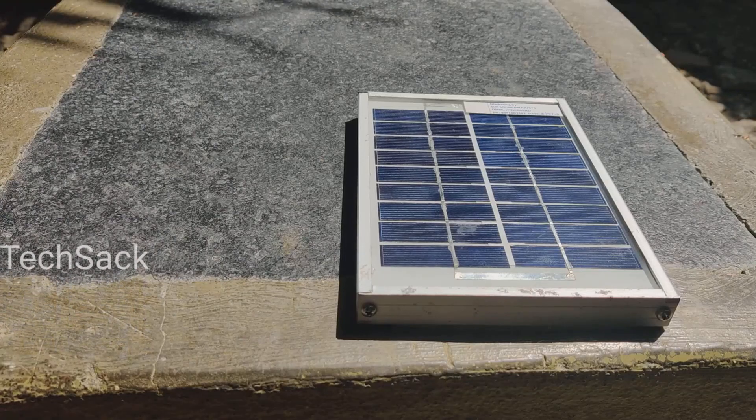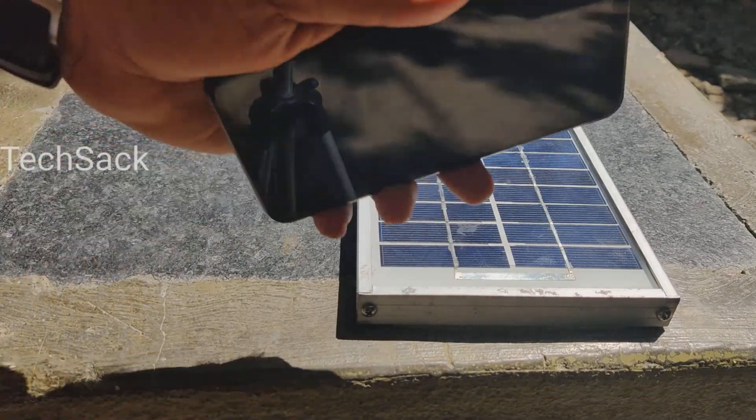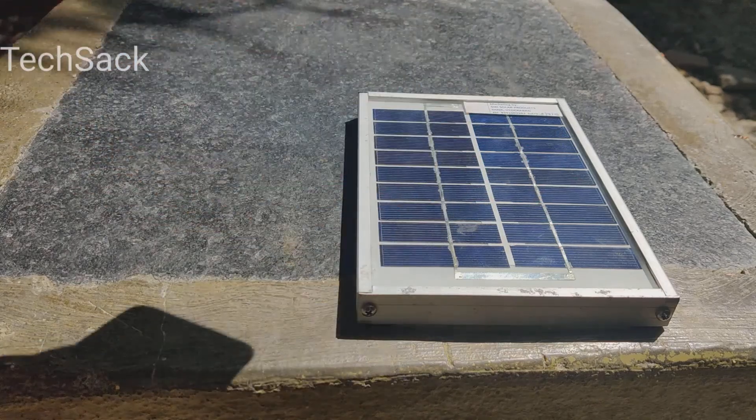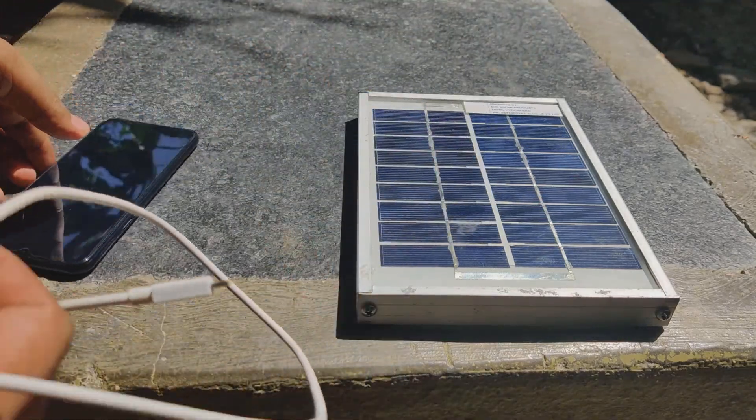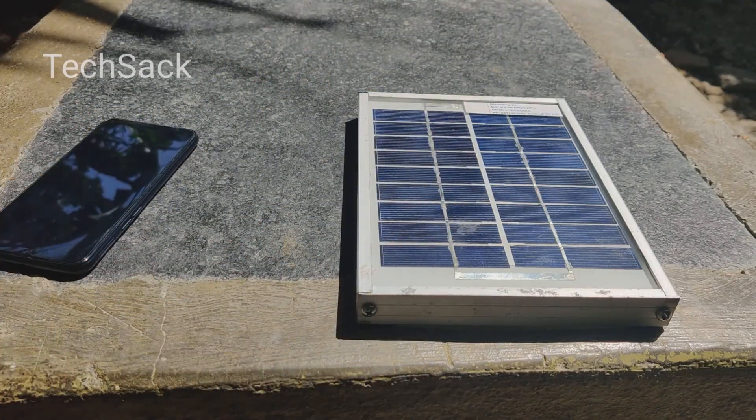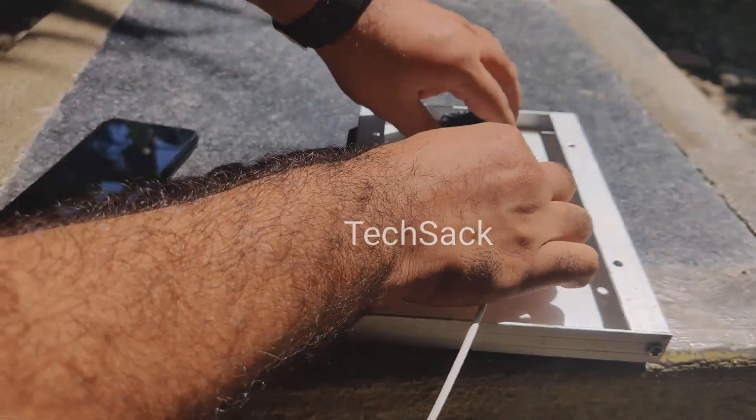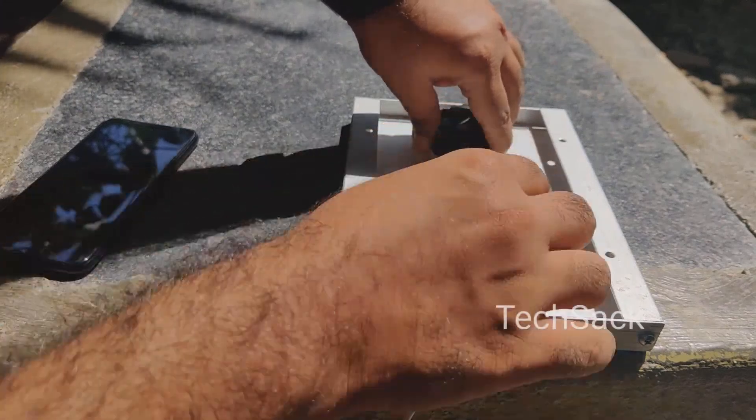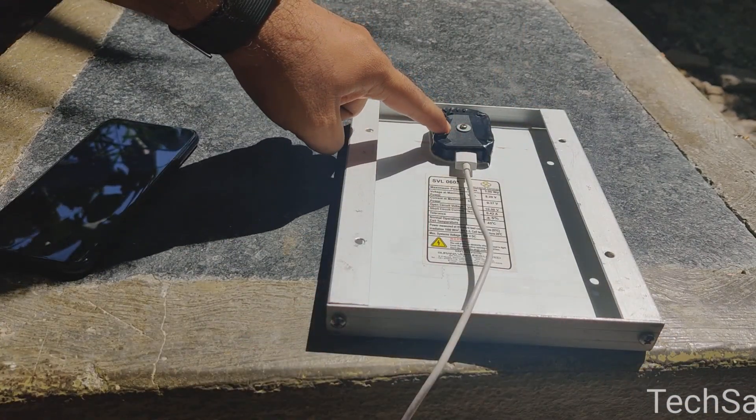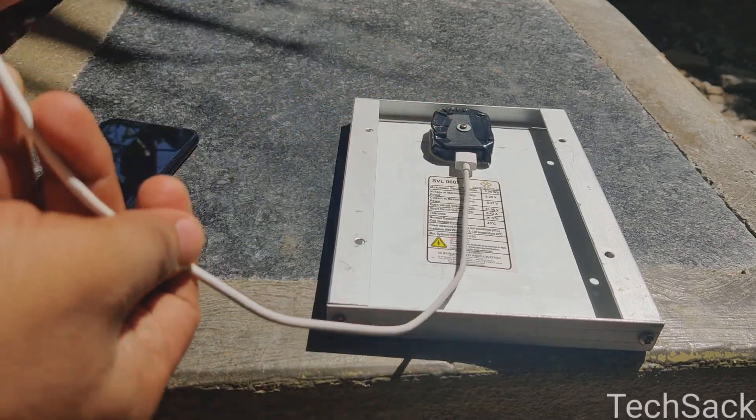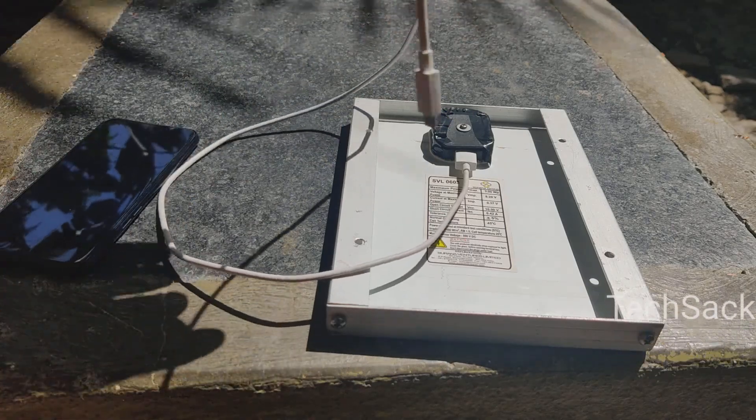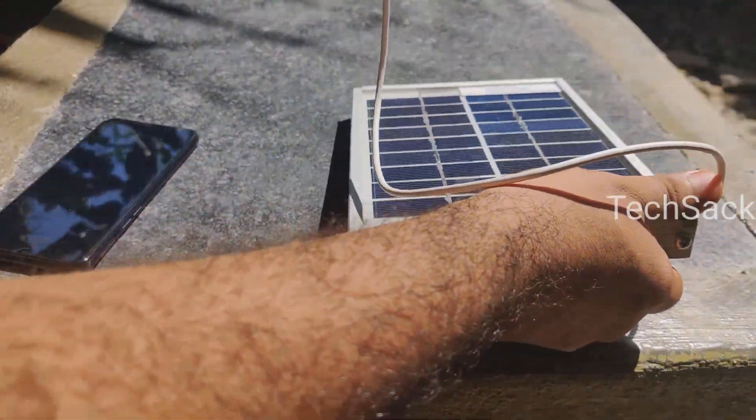So this is our USB solar charger and I will be charging an Android phone using this solar charger. So let me first connect the USB cable to the output of the solar panel. Now we have the IC regulator inside this case which will give out constant 5 volt through this charging cable. Let me turn it around.